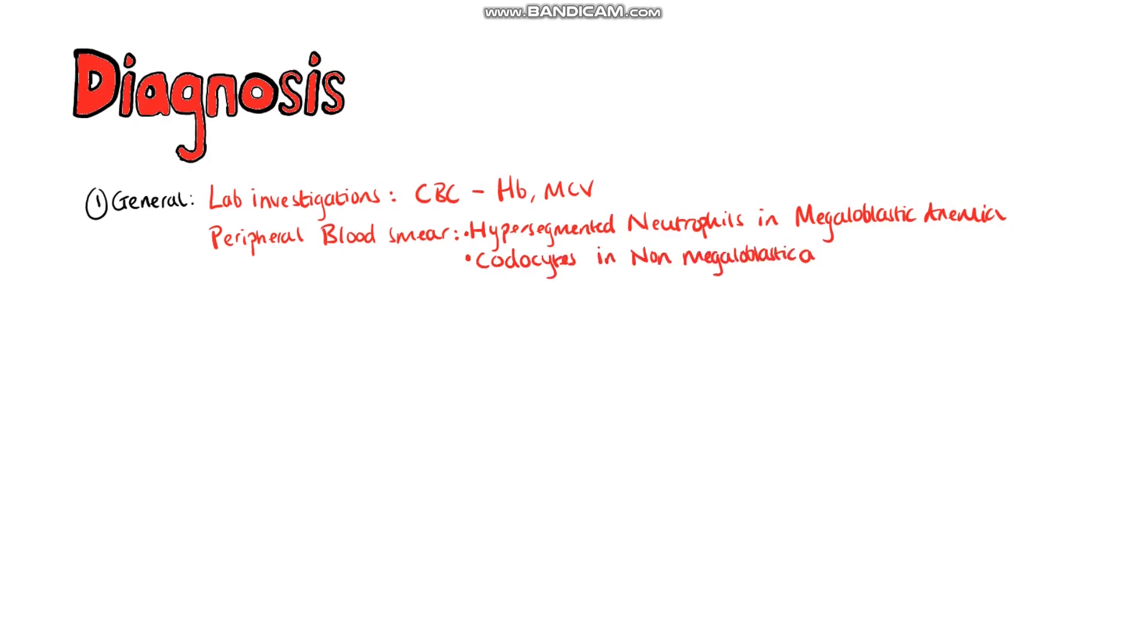Diagnosis generally involves looking at the complete blood count as usual, looking for hemoglobin, as well as the mean corpuscular volumes. This would then allow us to establish the presence of anemia, as well as to classify the anemia based on the MCV. Peripheral blood smear may show hypersegmented neutrophils, meaning neutrophils with nuclei with more than six lobes. This is a finding that is nearly pathognomonic for megaloblastic anemia. While in non-megaloblastic anemia, codocytes are often seen, which are also known as target cells. These have a central collection of hemoglobin surrounded by an area of pallor, which itself is surrounded by another collection of hemoglobin around the outside, giving it a target-like appearance.